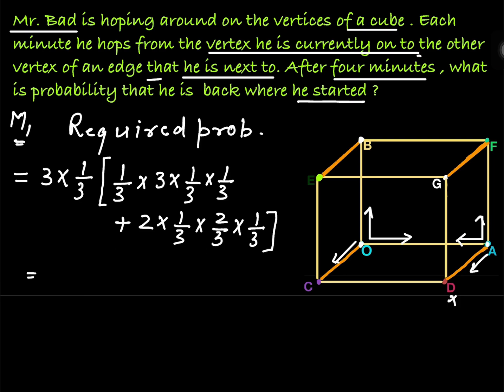So this is the solution of the question. Let's check what answer we are getting. 1/9 plus 4/27, which is equal to 7/27. This is first method.